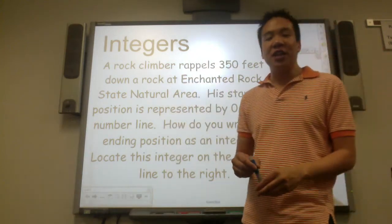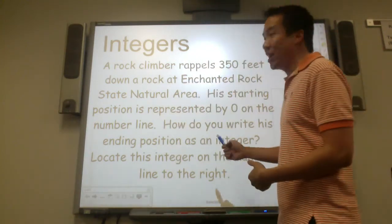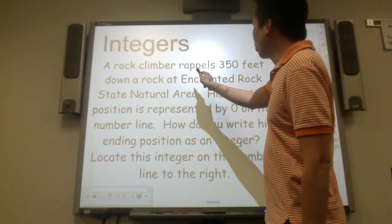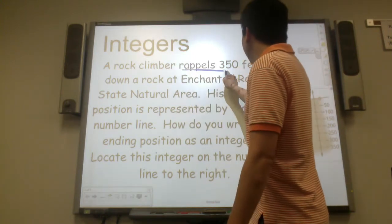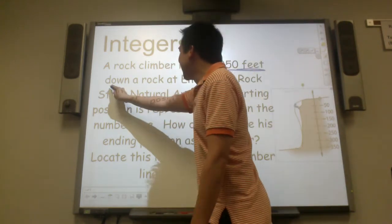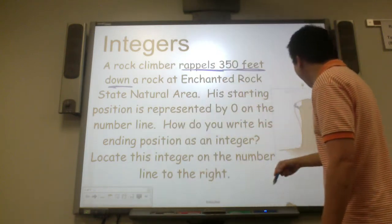You may not know the formal definition of integer, but we can still answer this question. So a rock climber repels 300 feet down. So he's going down.